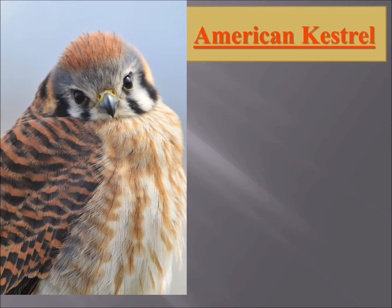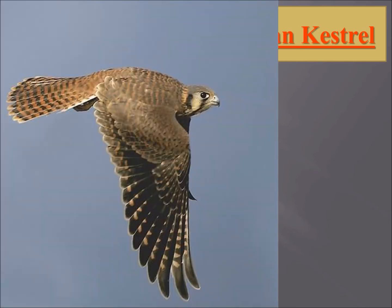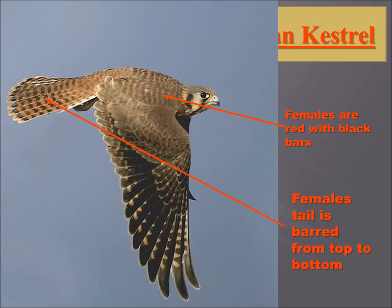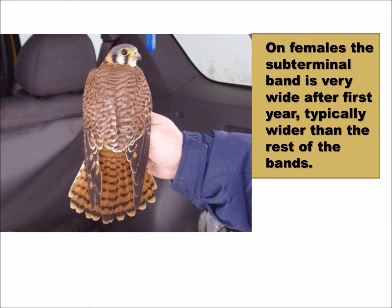Let's start with American kestrels. American kestrels are sexually dimorphic, so the males and females are not only different sizes but different colors. The females are red with black bars. You can see the black bars on the back and all over the wings. Their tail is barred from top to bottom. On females, the sub-terminal band — which is the very bottom band — is very wide after the first year. Typically the first year it's a skinny band, and then it thickens. That's one of the ways to usually be able to tell correctly if it's an adult.